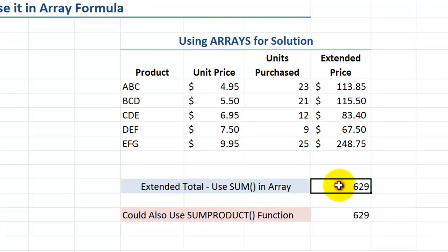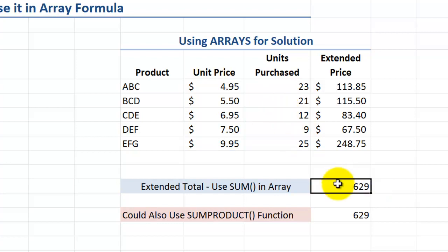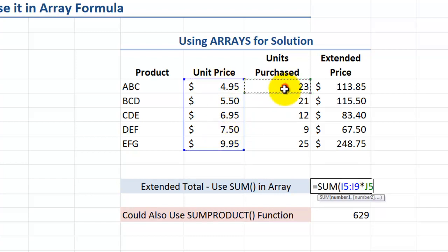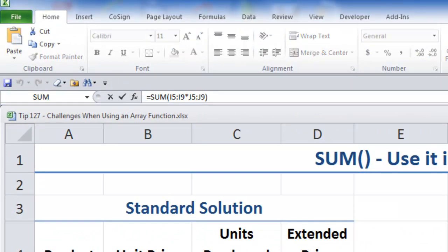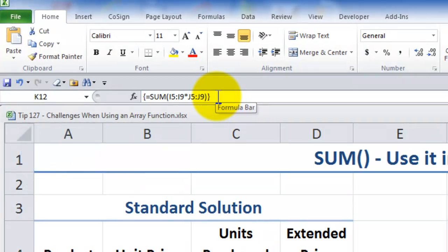Now let's take a look at how we can use a standard function, such as the SUM function, as part of an array formula. In this case, I'm going to sum the result of the first array multiplied by the second array. There's only a single cell here, so I select it, then: equals, use the SUM function, select the first array, multiply the first array by the second array, close the parentheses. Remember to use Control+Shift+Enter. Now I have my array formula, and when I look in the formula bar, you see the curly braces that identify this as an array formula.